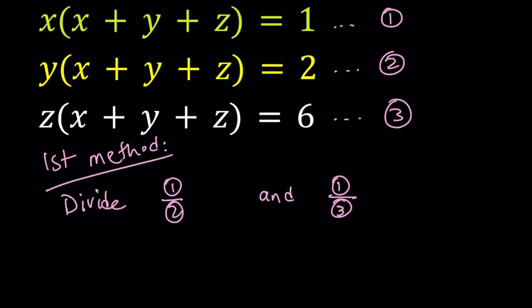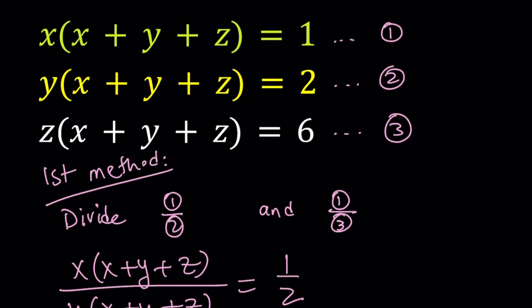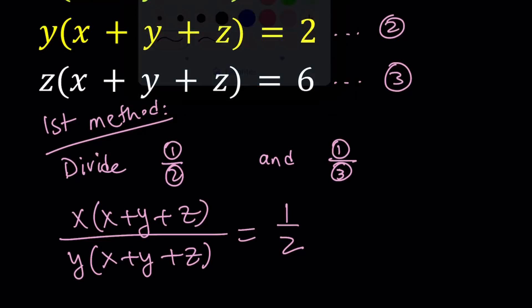But when I divide the first equation by the second equation, that should give me one half. And now we can go ahead and simplify it. Obviously, we do need the condition that x plus y plus z does not equal zero. Because if that's the case, then you can't really find any x, y, z values. And obviously, that's not going to happen. It doesn't satisfy the system.